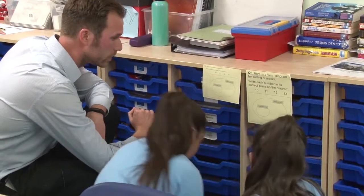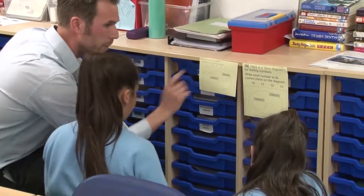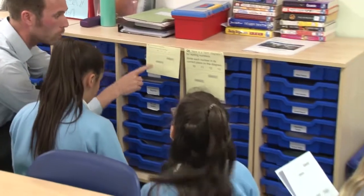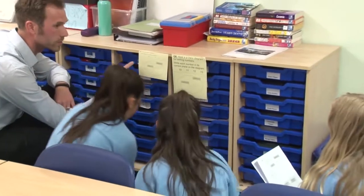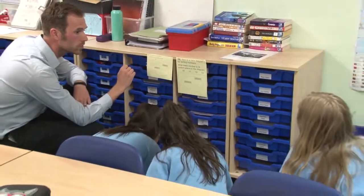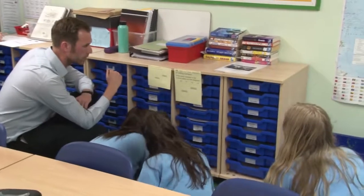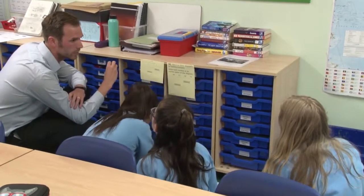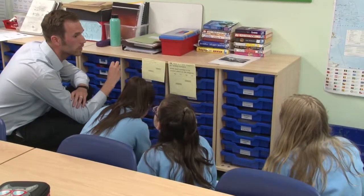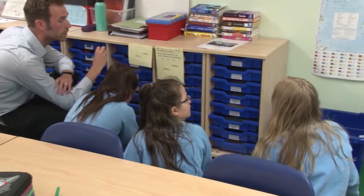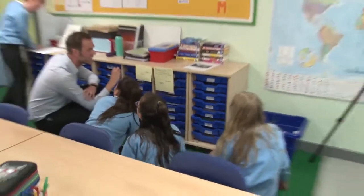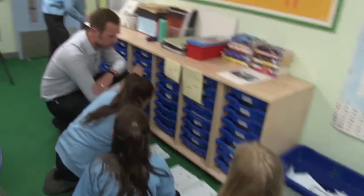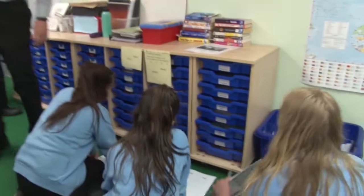Millie, where's thirteen going? And why is thirteen going on the outside? Can you tell me what thirteen is — what type of number is thirteen? Be confident. Prime number — good girl, well done girls, good stuff.